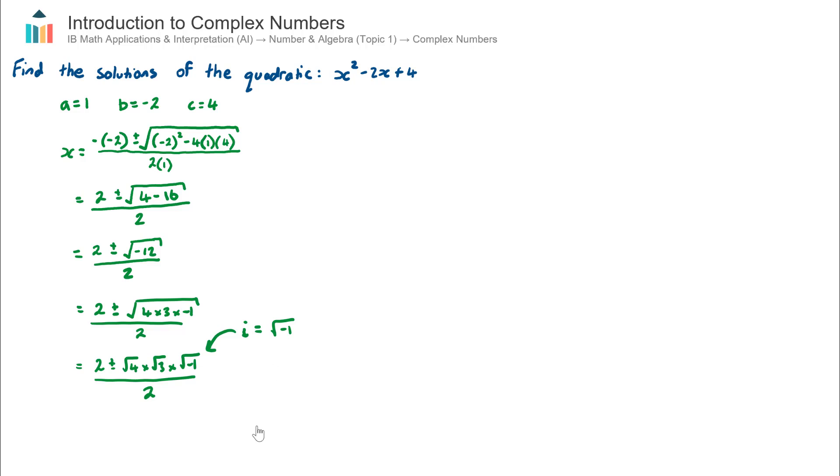So if I take this one step further, this will be 2 ± (now root 4 is just 2), root 3 I'm going to leave as is, and the square root of -1 I'm going to replace with i, all over 2.